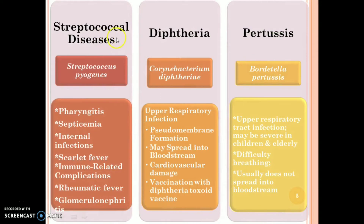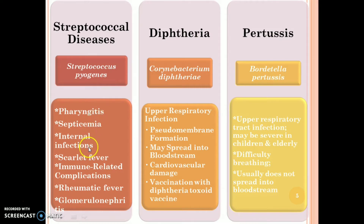Streptococcal disease is caused by Streptococcus pyogenes. The symptoms are pharyngitis, septicemia, internal infections, scarlet fever, and immune-related complications such as rheumatic fever and glomerulonephritis.